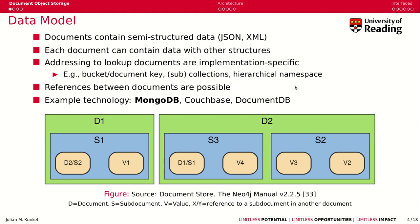First, we talk about the document object storage in general. The data model of a document object store is that it allows you to store semi-structured data, for instance JSON and XML. A document therewith contains data with additional structural information.